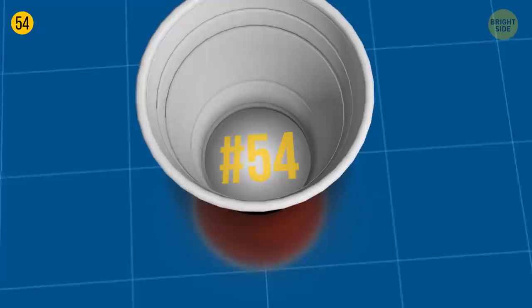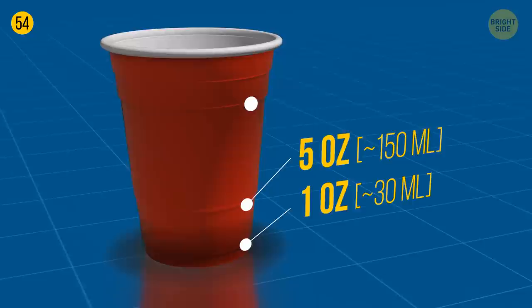Red cups you saw at parties can measure liquids. The bottom line equals one ounce, the second line equals five ounces, and the third line equals twelve ounces.